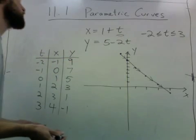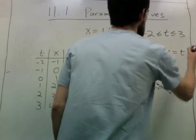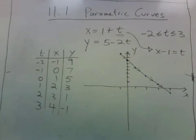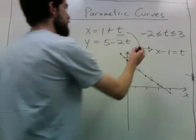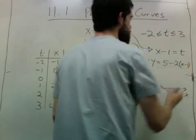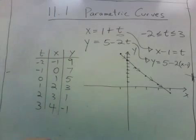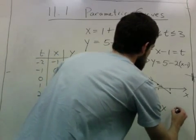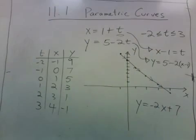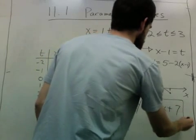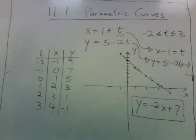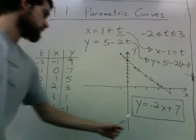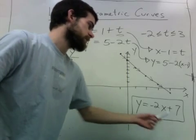One way to do that is to solve for t. We get x minus 1 equals t, and if we put that into the equation for y, we find that y is just a line: y equals negative 2x plus 7. So we went through plotting a parametric curve and finding a Cartesian equation for the curve — one that doesn't involve a parameter.